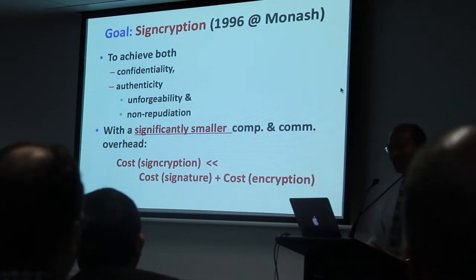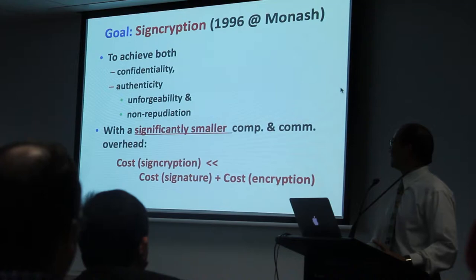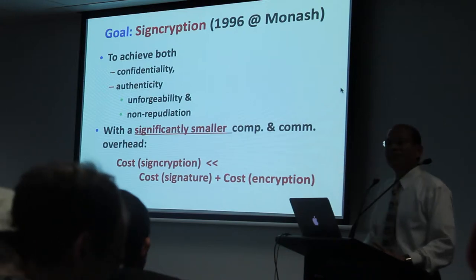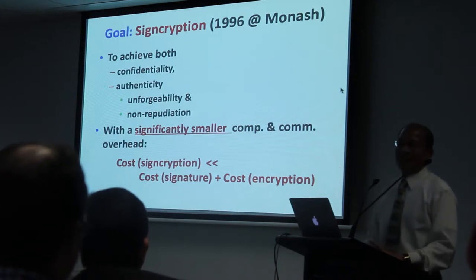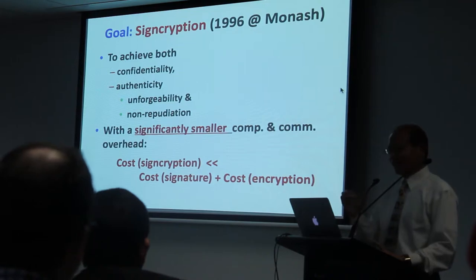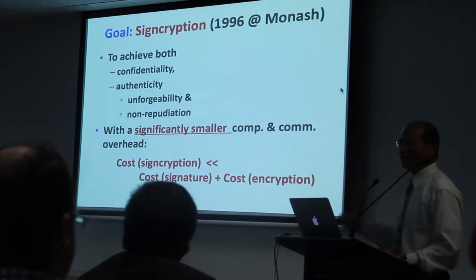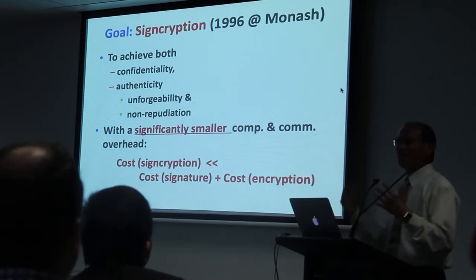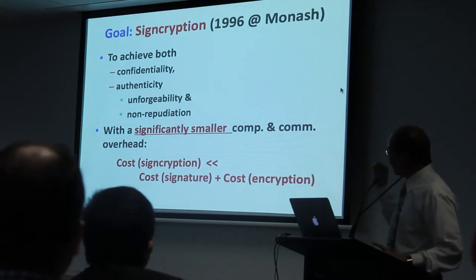I had specific goals in mind. I wanted to achieve two functions: confidentiality of data, and authenticity of data. Specifically, I wanted to provide what is called non-repudiation — basically the function of digital signatures. Additionally, I wanted to achieve a technique with far smaller cost overhead compared to the traditional way. The cost of the new signcryption is far smaller than doing signature and encryption separately.